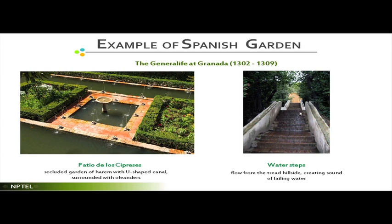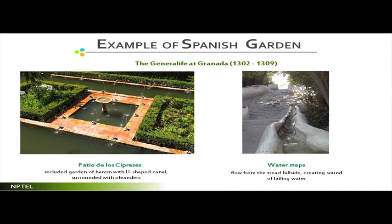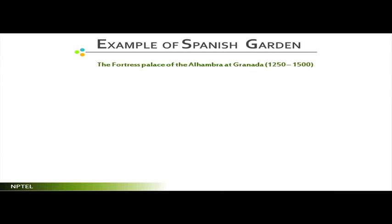Looking at the steps again - this is the step coming in this form, and the water is flowing through it. The water is sometimes allowed to flow through these particular steps. The steps have width, so if you walk on them you can have slightly wet steps - also a very interesting landscape feature that can be emulated even today. These are different views of the water steps - different surfaces allow the water to flow, get broken into small particles, and make an interesting sound. The next example I am going to cite is of Alhambra.